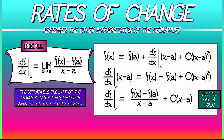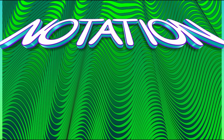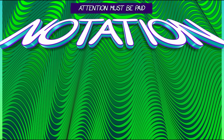This form of the derivative — this limit of change in output divided by change in input — is, in fact, the reason for the notation df dx. It's kind of like an infinitesimal change in the output divided by an infinitesimal change in the input.